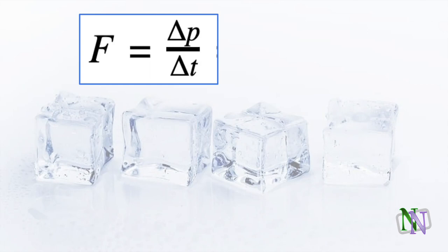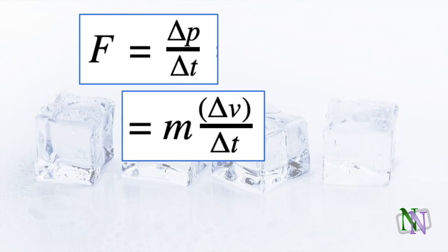Lastly, here is the justification for a well-known formula based on the second law. In SI units, the force is equal to the rate of change of momentum. And since in IB physics we are only concerned with changes in velocity, it can be written like this.